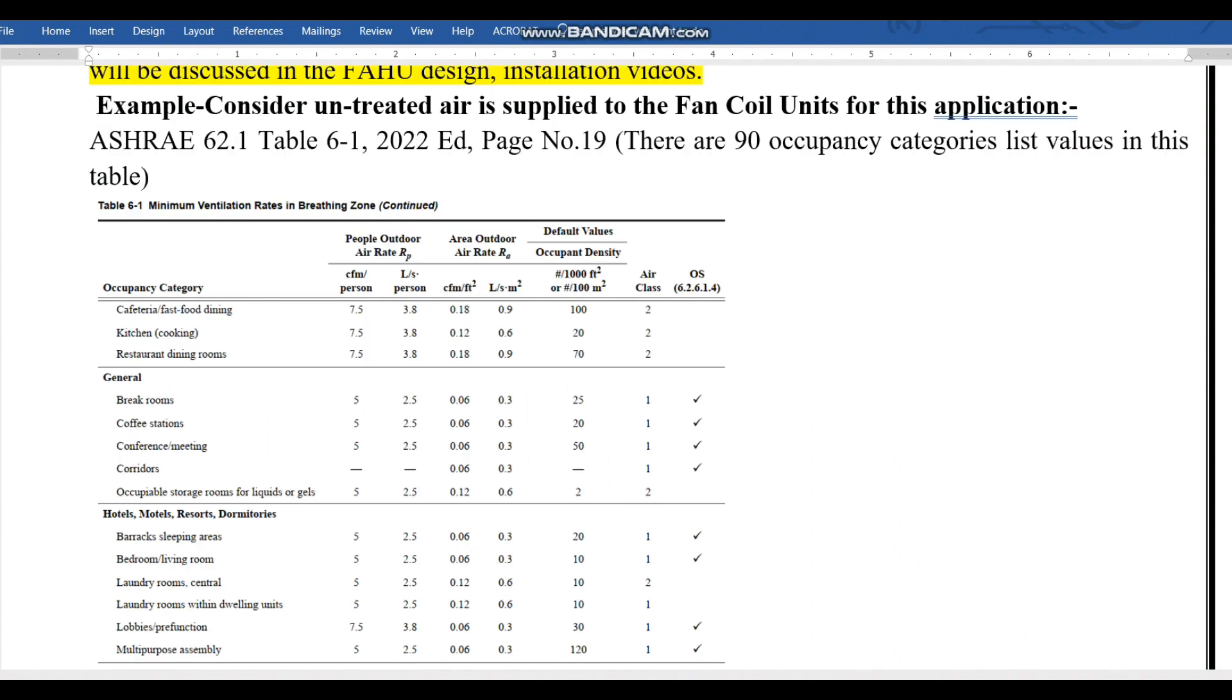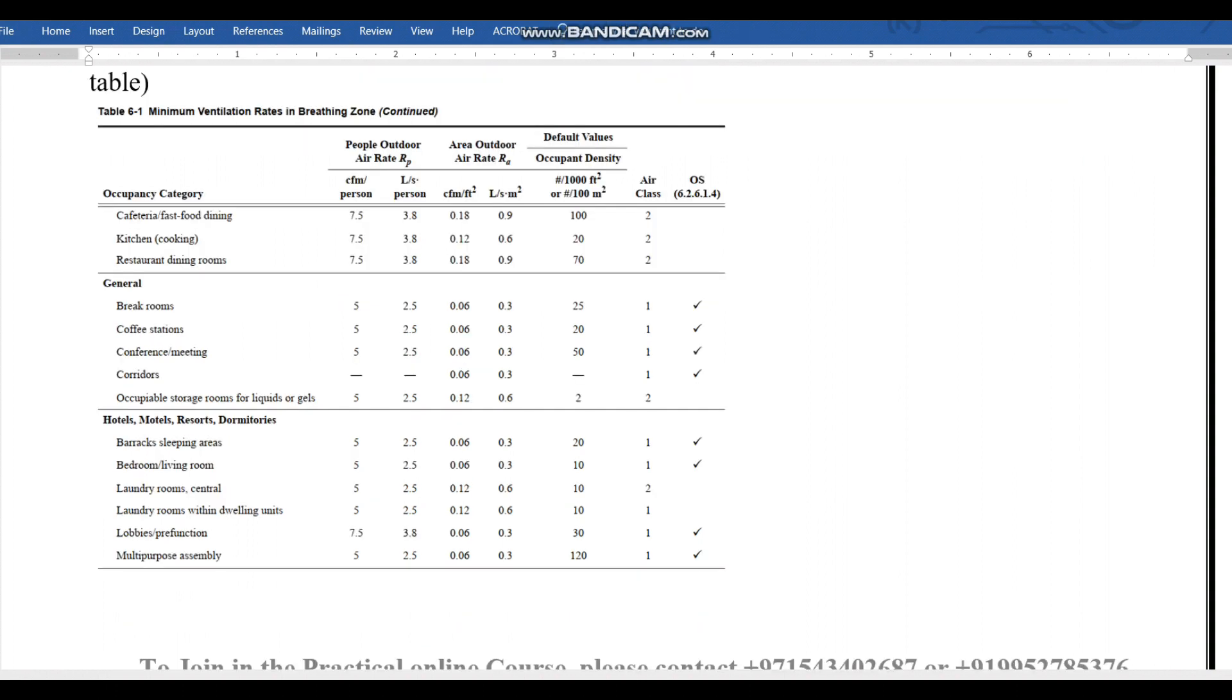If you see ASHRAE 62.1 Table 6-1, 2022 edition, you can see there are total 90 occupancy category lists classified in this table. Table 6-1 is for minimum ventilation rate. If you go to table 6-2, the next table in ASHRAE 62.1, that is for the exhaust air.